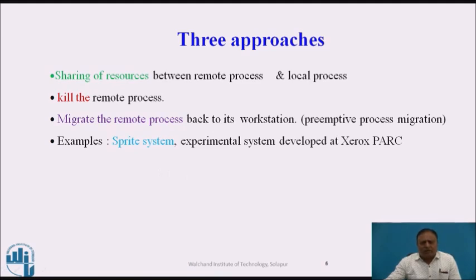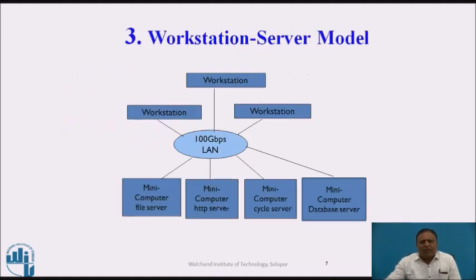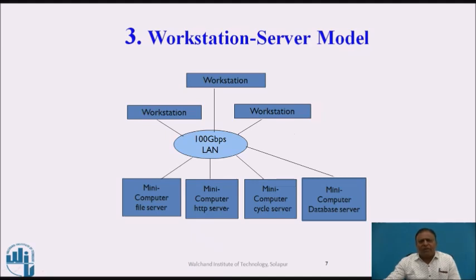The third model is the workstation server model. In this model, different workstations and some servers are interconnected by using a communication network. A 100 Gbps LAN connects the workstations and servers as shown in the figure. Some workstations are diskless workstations — diskless means they do not contain any hard disk. They execute their procedures by sending parameters to the server; the process executes at the server side and the result is redirected back to the workstation.